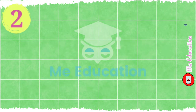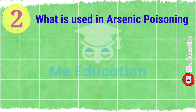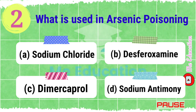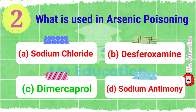Question number two: what is used in arsenic poisoning? Options: A) sodium chloride, B) desferrioxamine, C) dimercaprol, D) sodium antimony. This question is very important — pause the video and try to solve it. The right answer is option C, dimercaprol.